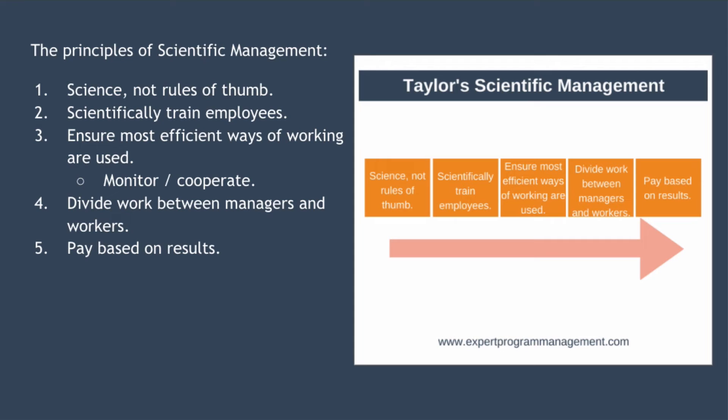One thing to note is that most sources will provide just four principles of scientific management, but the fifth principle — pay — is included here as it's a key component of scientific management and really necessary in order to understand Taylorism.